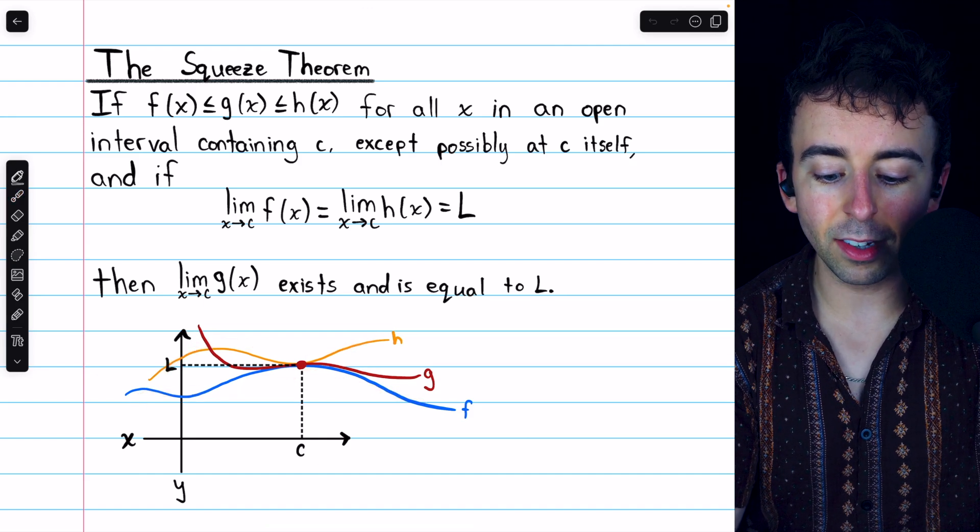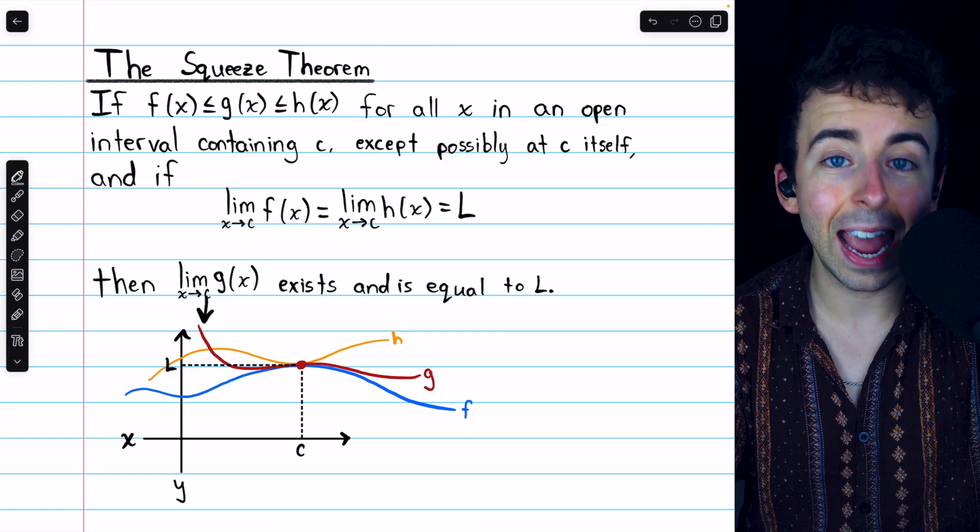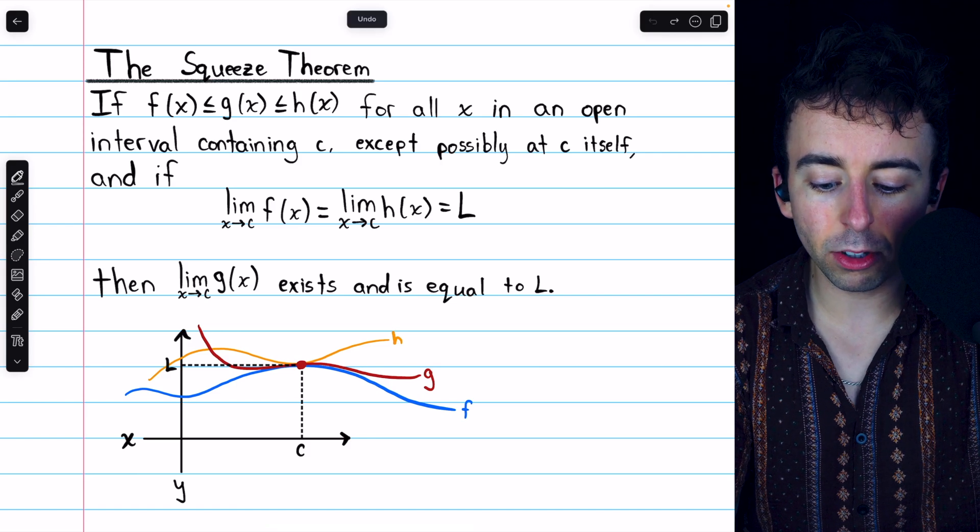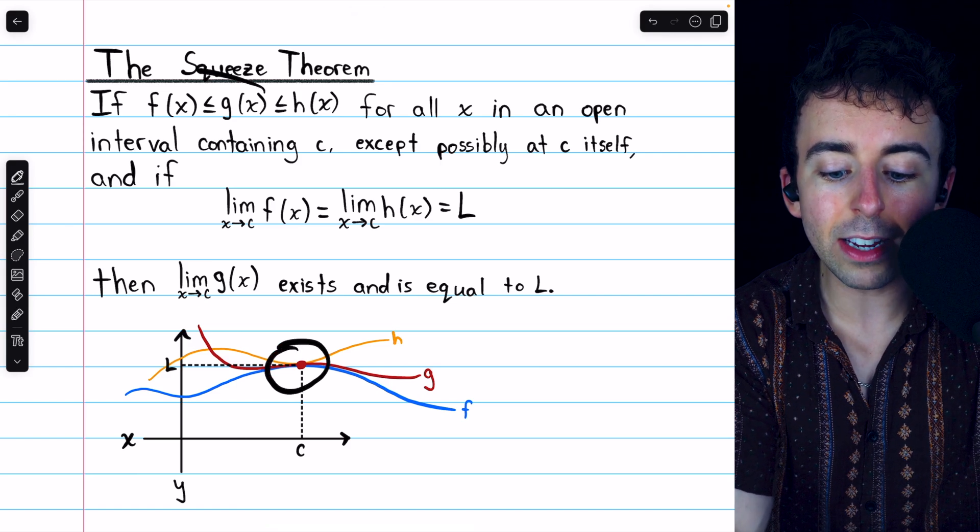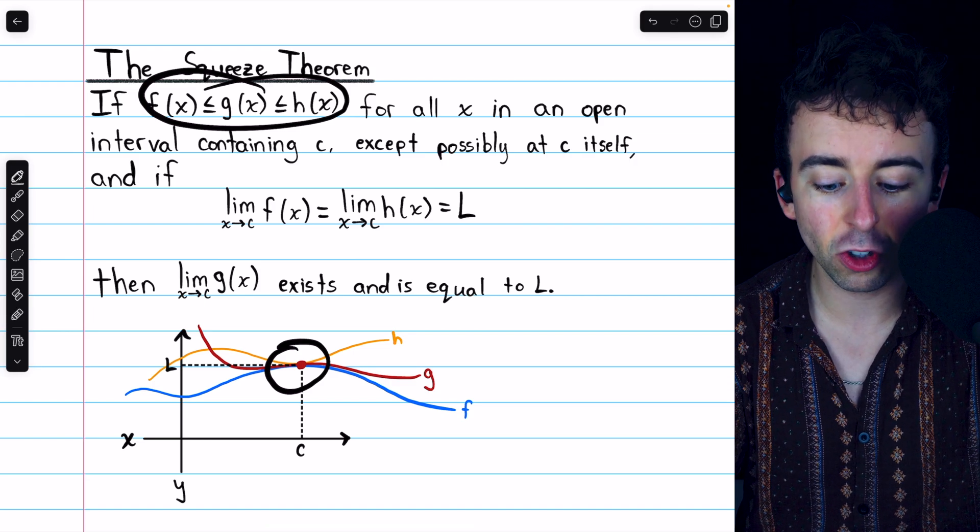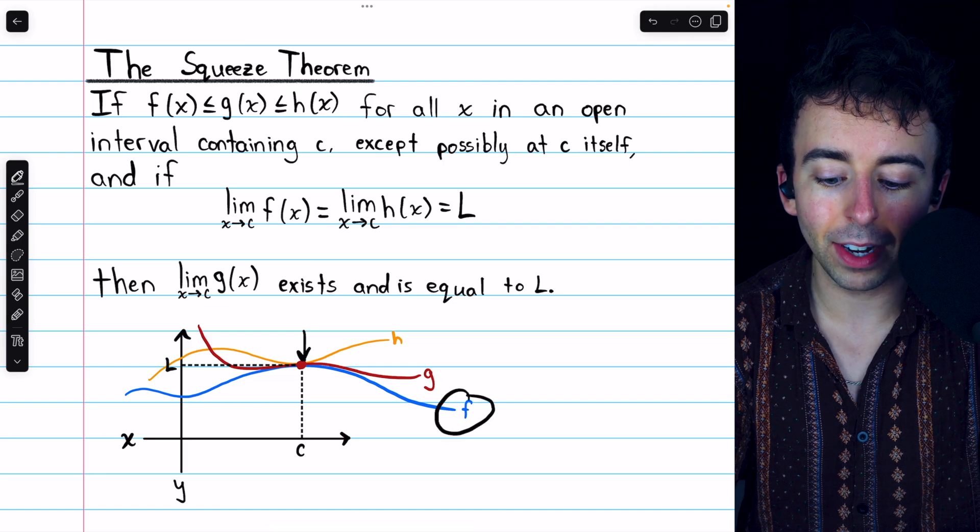In the picture, it's f and h. Notice that g is not between f and h over here. g is, in fact, greater than both f and h. But if there's some space around this point c where g is squeezed between f and h, then at c, its limit must be the same as the limits of f and h.